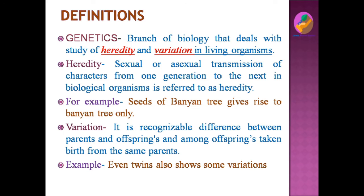You might already know what genetics is — it is a branch of biology which deals with two important characters: heredity and variation. It is applicable for all living organisms. Before understanding what genetics is, we should first understand what heredity and variation are, and once we understand those terms, we can easily understand genetics.